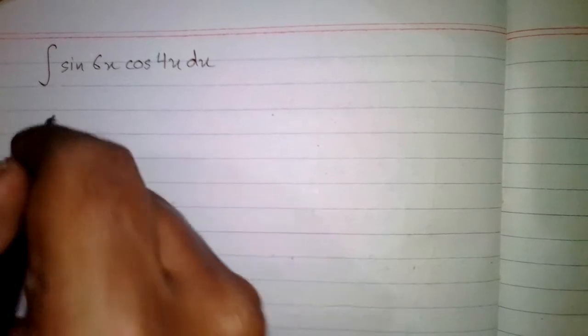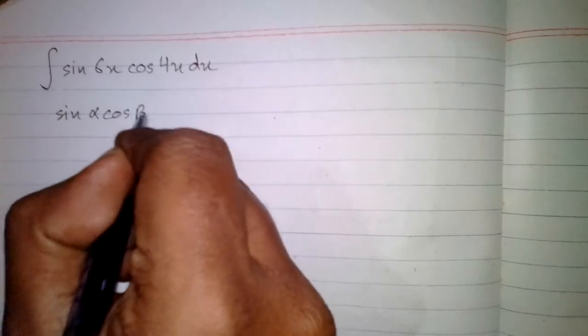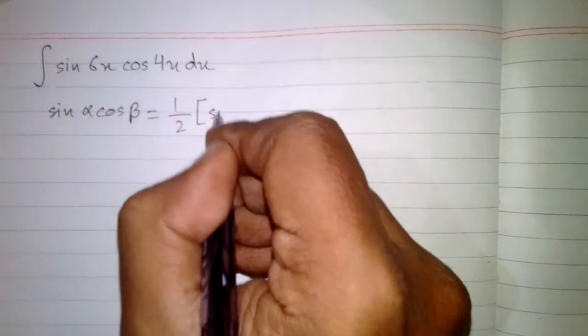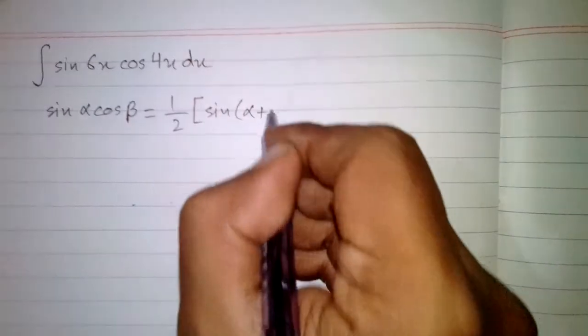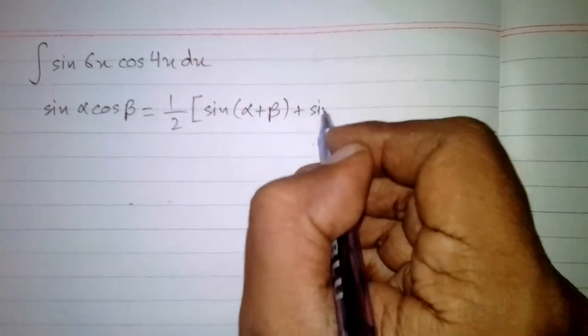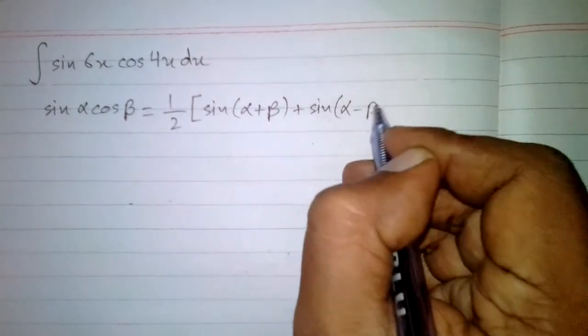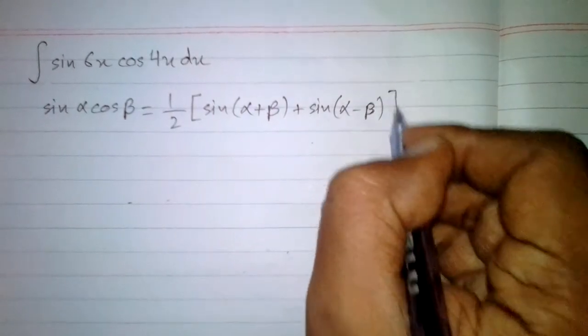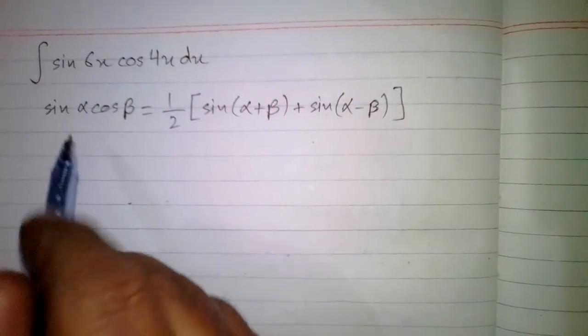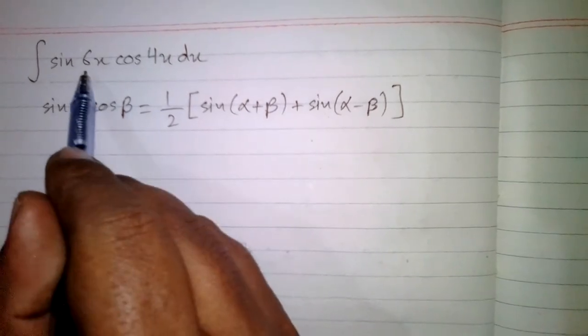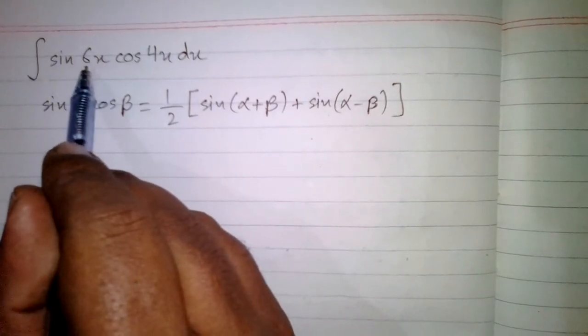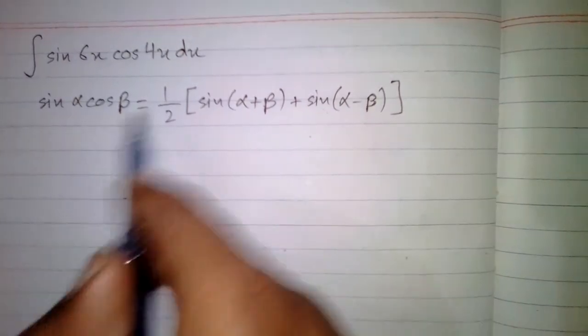In this video we will find the integral of sin 6x cos 4x with respect to x. We will use the formula: sin alpha cos beta is equal to 1 upon 2 times sin(alpha plus beta) plus sin(alpha minus beta).